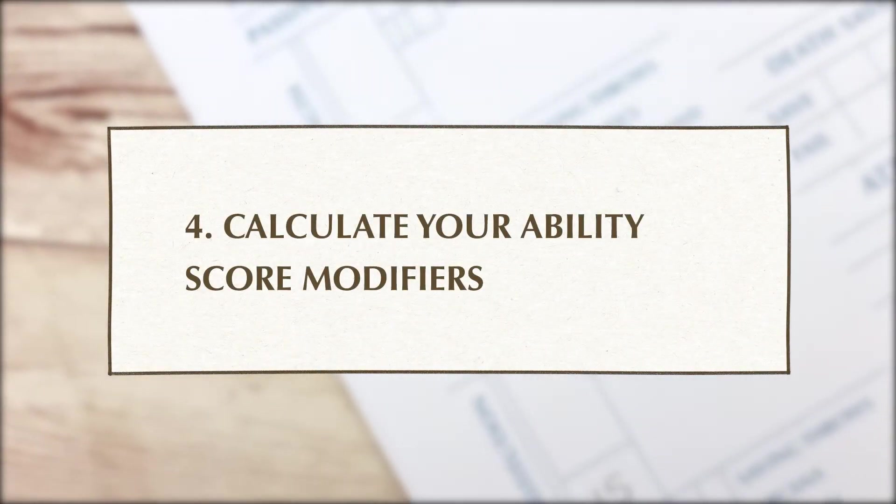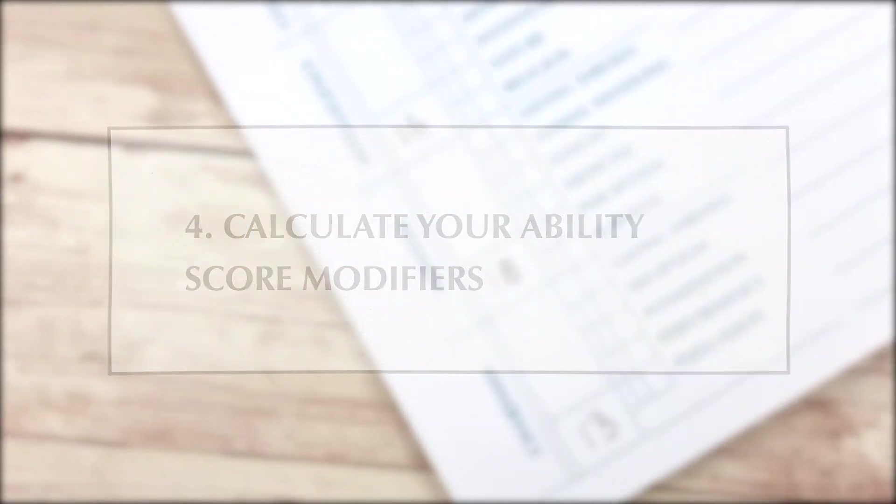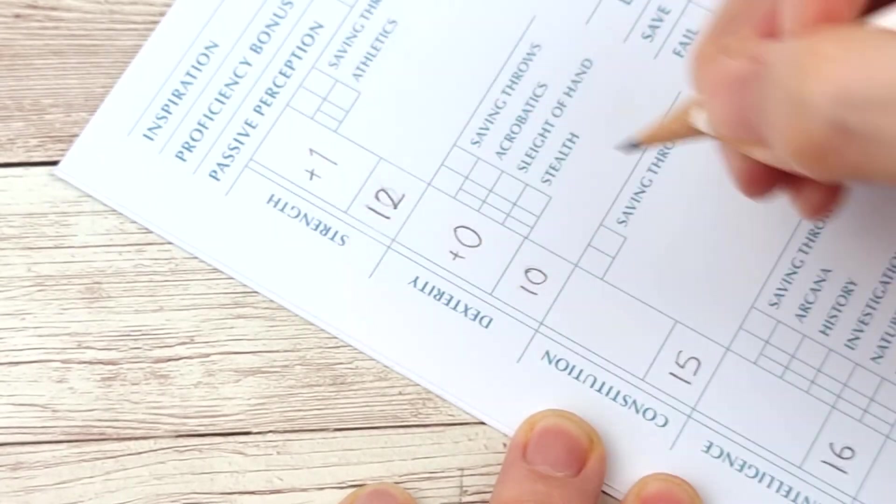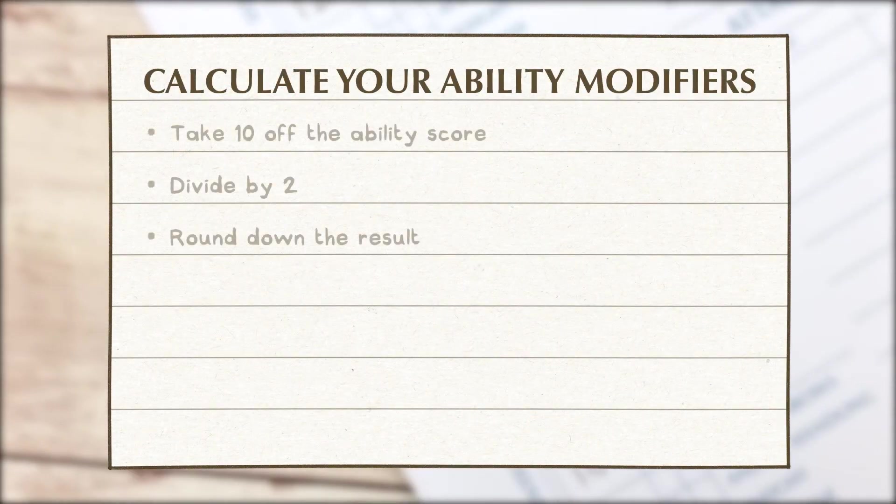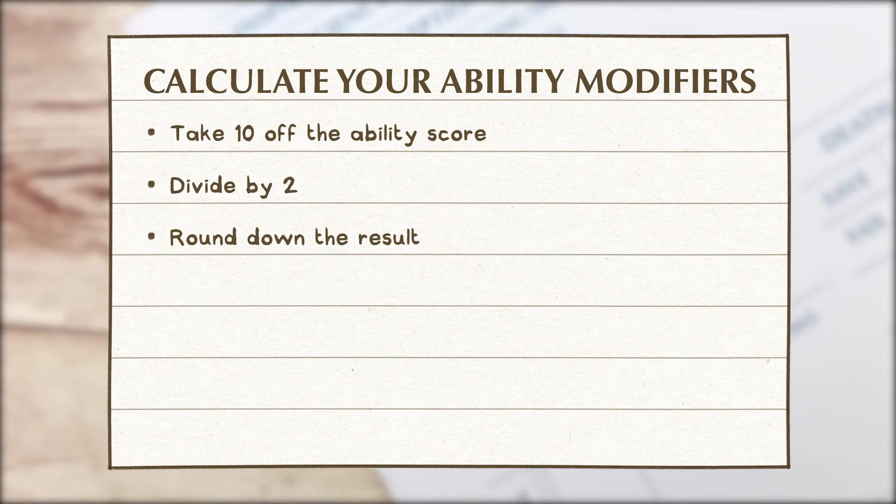Now that we've noted the race or ancestry features it's time to calculate the modifiers for your ability scores. You'll use these modifiers a lot during games as you add it to any relevant rolls. You can calculate each modifier by taking 10 off the number and then dividing it by 2 rounding the final number down if necessary.